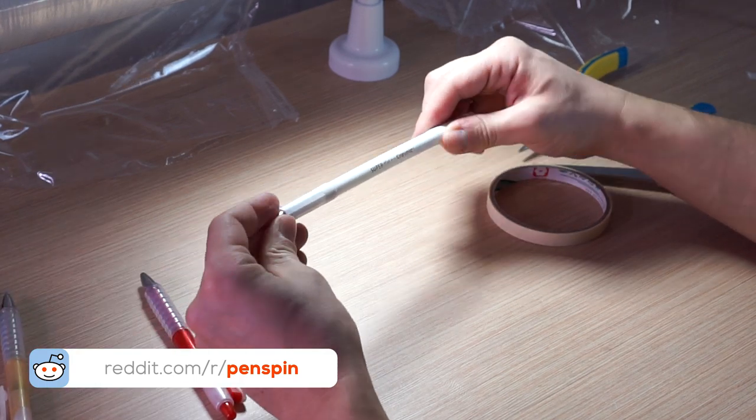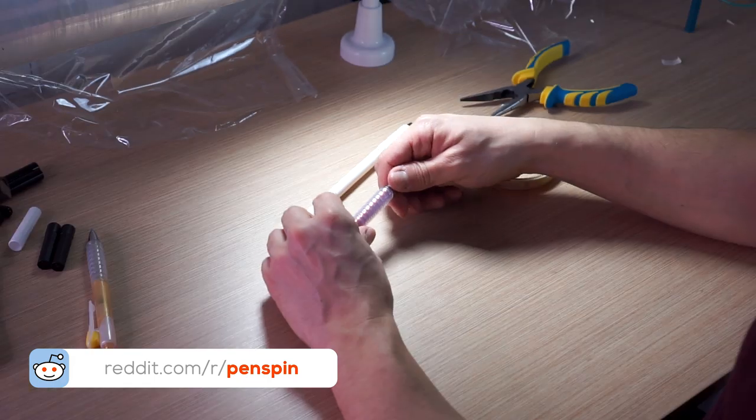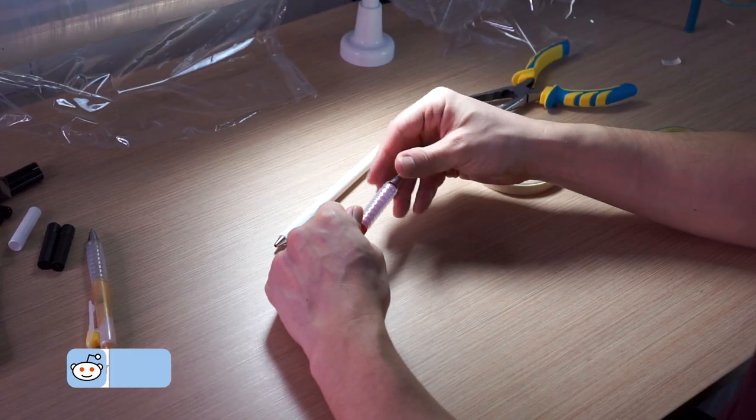Now just put Signo tips inside of Reynold caps and dismantle BSIQ-200.